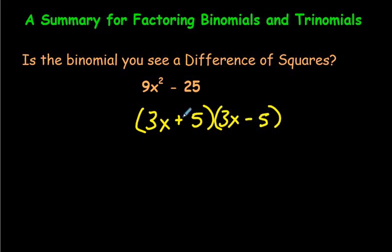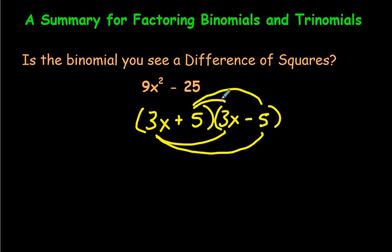What happens is the positive and the negative — if we were to expand and multiply it all out again — the positive and the negative would cause the middle term to cancel itself out, leaving just the first and the last term. The middle term cancels out. You can push pause and try it if you like. That's how you factor a difference of squares.